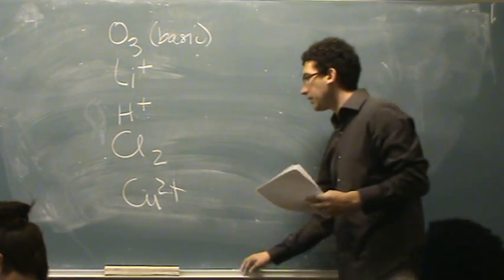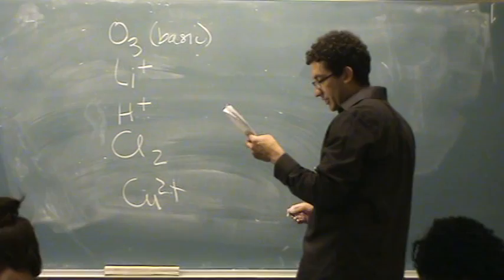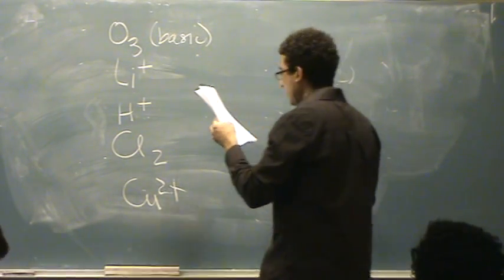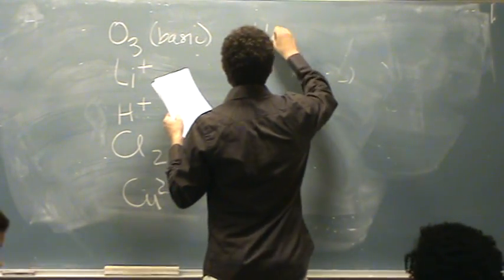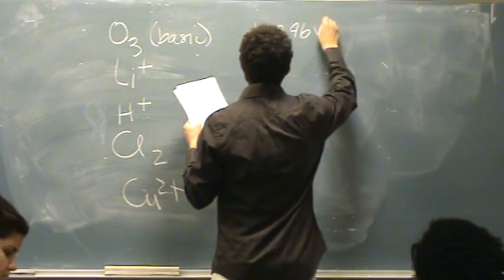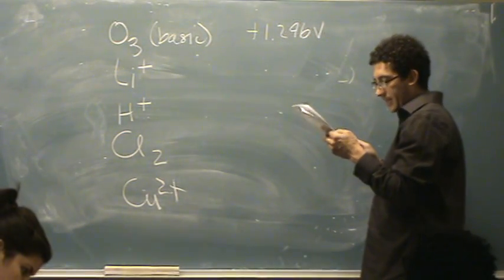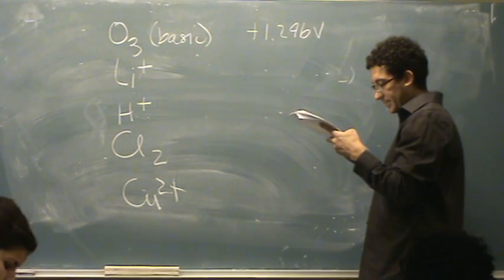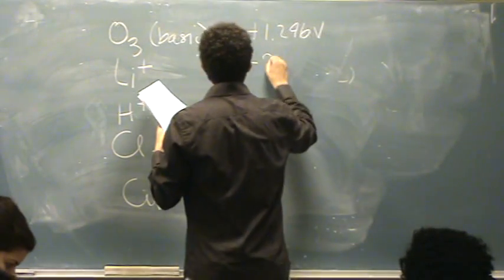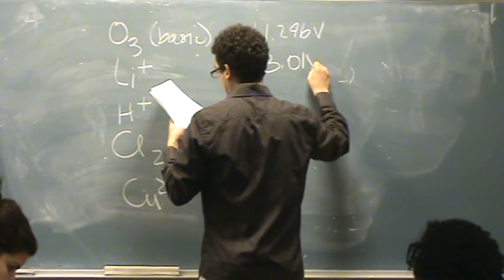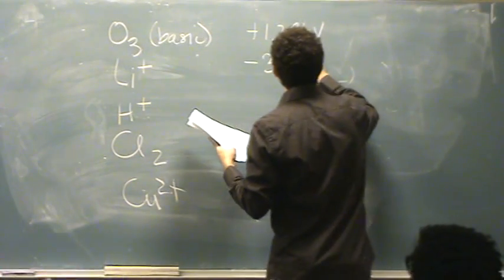The first one requiring us to be in basic conditions, and that's O3. So that's plus 1.246 volts for its standard potential. Lithium plus is negative 3.01 volts, or 04 volts.